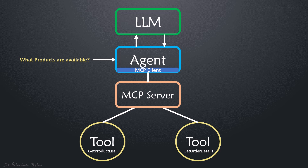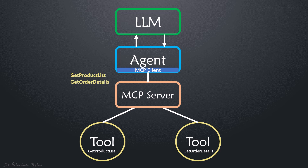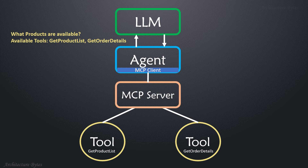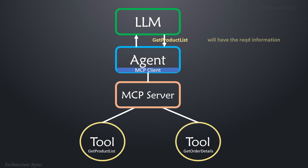Our user prompt is: what products are available? Our agent, using the MCP client, queries the MCP server asking what are the available tools. The MCP server returns a list of available tools — in this case, get product list and get order details. The agent then sends the user prompt and list of available tools to the LLM.